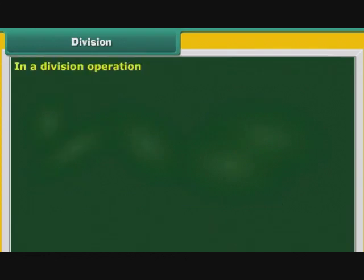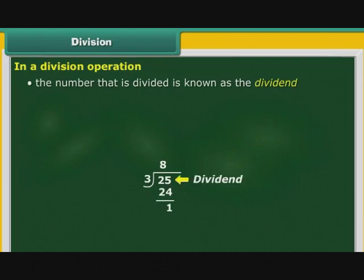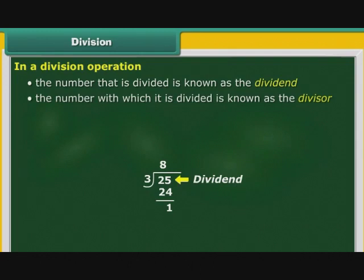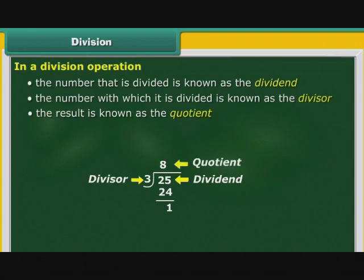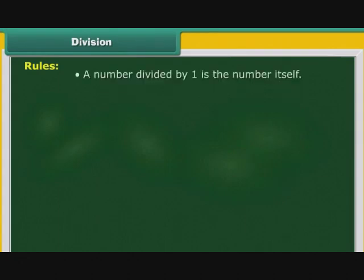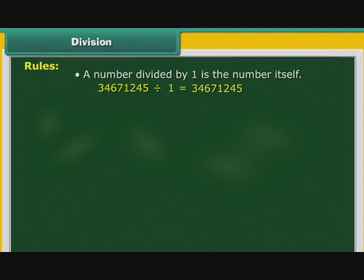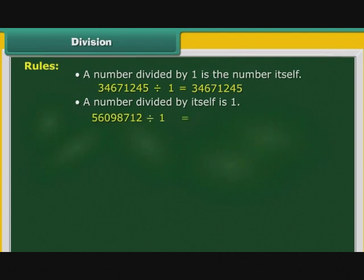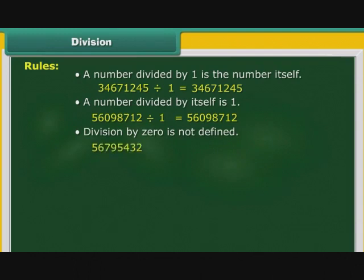In a division operation, the number that is divided is known as the dividend. The number with which it is divided is known as the divisor. The result is known as the quotient, and the number left over when the divisor does not divide the dividend exactly is known as the remainder. Rules of division: a number divided by 1 is the number itself; a number divided by itself is 1; division by 0 is not defined.